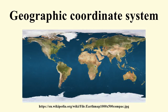A geographic coordinate system is a coordinate system that enables every location on the Earth to be specified by a set of numbers, letters, or symbols. The coordinates are often chosen such that one of the numbers represents vertical position, and two or three represent horizontal position. A common choice of coordinates is latitude, longitude, and elevation. To specify a location on a two-dimensional map requires a map projection.